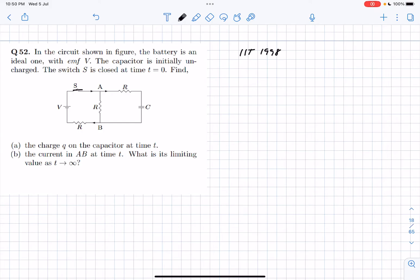If I redraw the circuit, this is V and this is the resistance on this branch R. I'm trying to replace this part of the circuit into an equivalent battery.